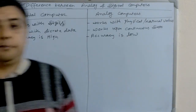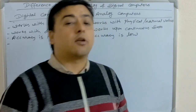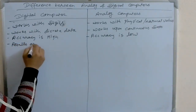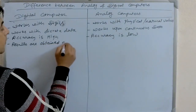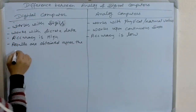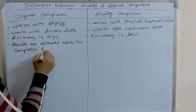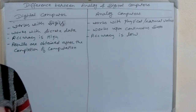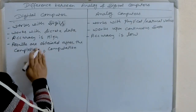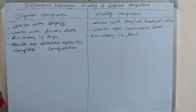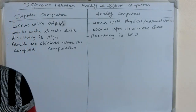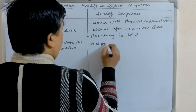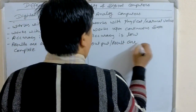The next point is, results are obtained after the complete computation in digital computers. In analog computers, the output or results are continuous.